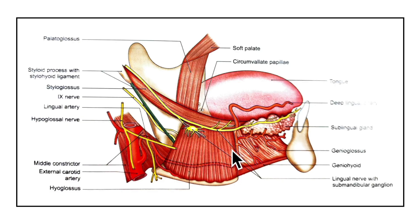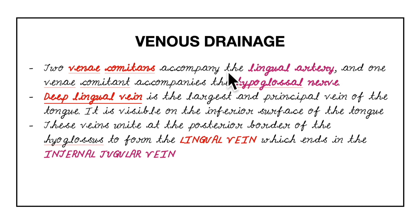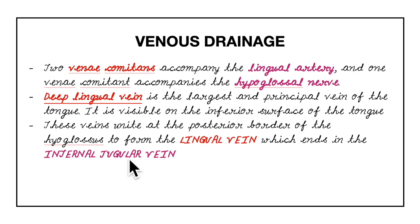The root of the tongue is also supplied by the tonsillar artery, a branch of the facial artery, and the ascending pharyngeal branch of the external carotid artery. Regarding venous drainage, two venae comitantes accompany the lingual artery and one accompanies the hypoglossal nerve. The deep lingual vein is the largest and principal vein of the tongue, visible on the inferior surface. These veins unite at the posterior border of the hyoglossus to form the lingual vein, which ends in the internal jugular vein.